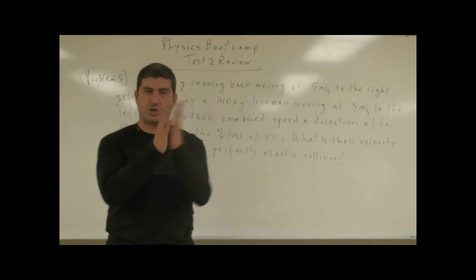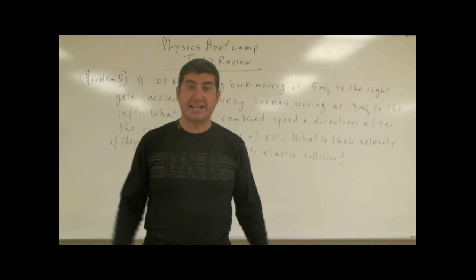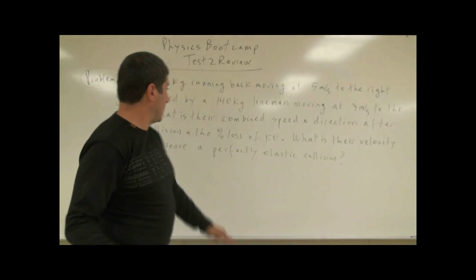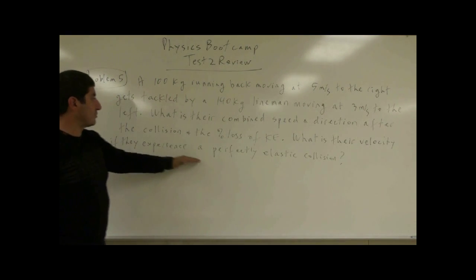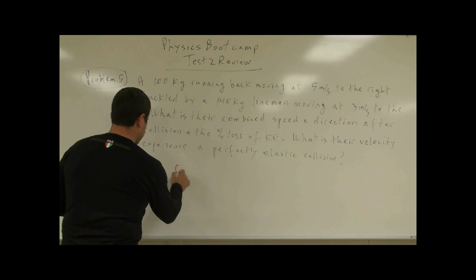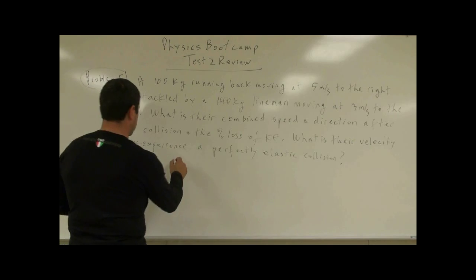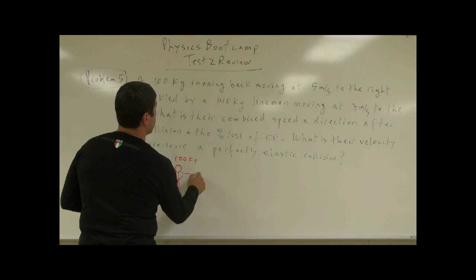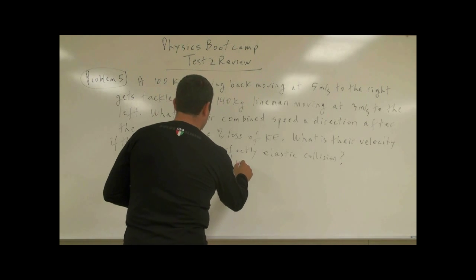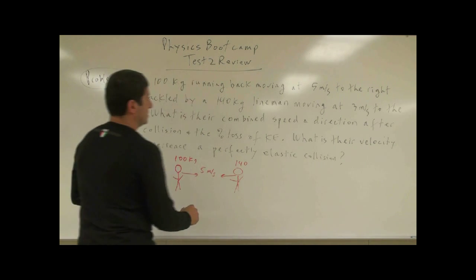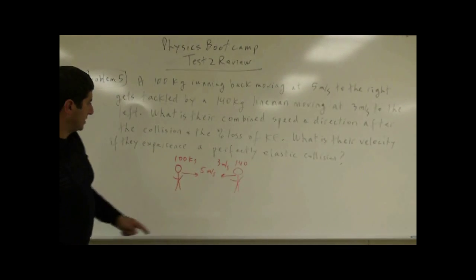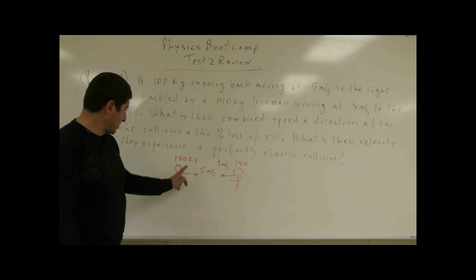First, we're assuming the collision is perfectly inelastic, so they collide, combine, and move together. Then the second part asks: what is their velocity if they experience a perfectly elastic collision? So imagine the 100-kilogram running back at five meters per second and the 140-kilogram lineman at three meters per second. Who wins? It depends on their momentum.